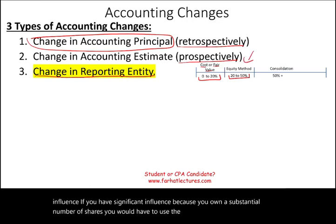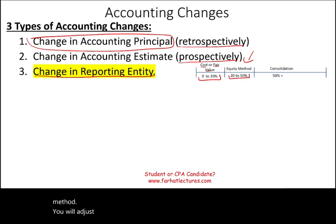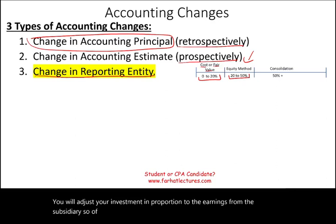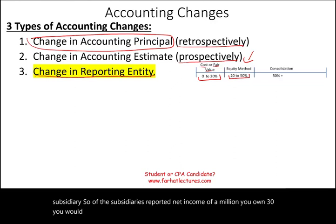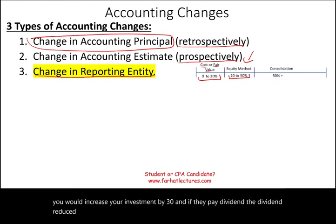Under the equity method, you will adjust your investment in proportion to the earnings from the subsidiaries. So if the subsidiary reported net income of a million and you own 30 percent, you would increase your investment by 30 percent. And if they pay a dividend, the dividend reduces your investment under the equity method.